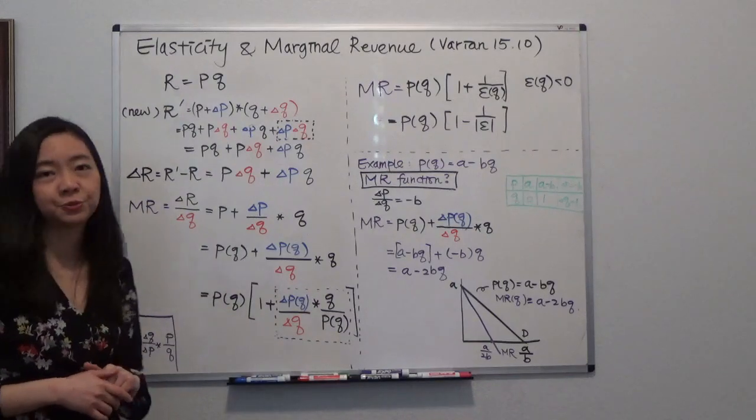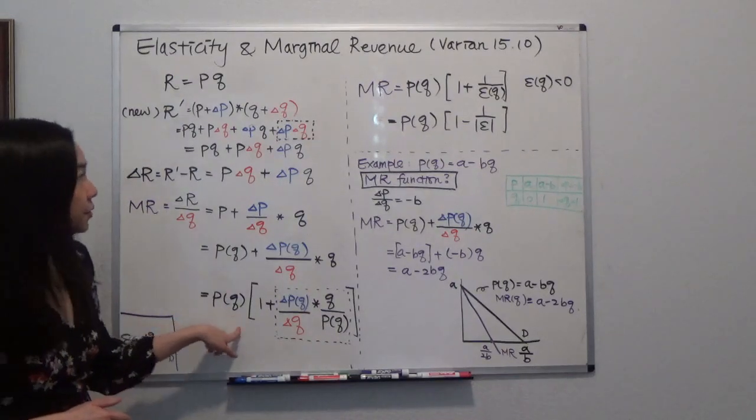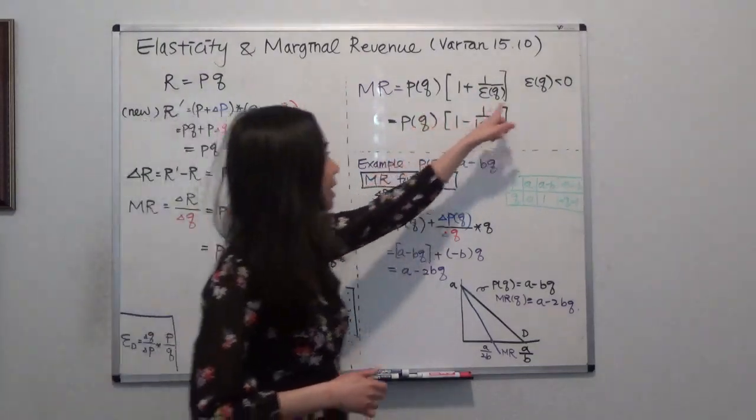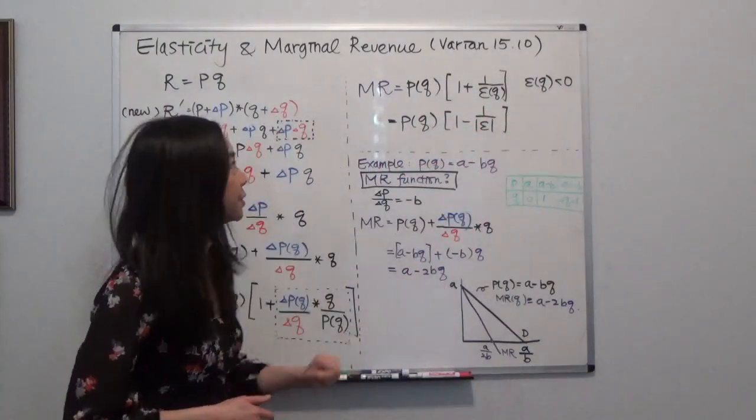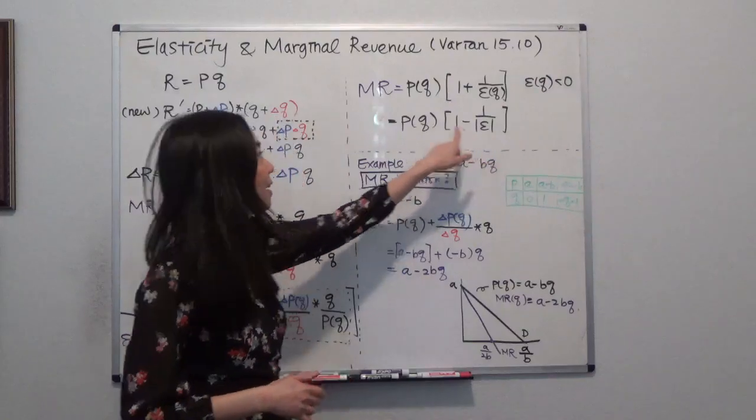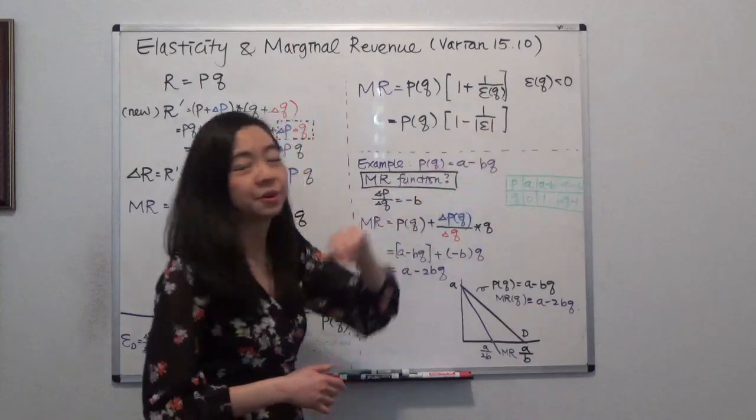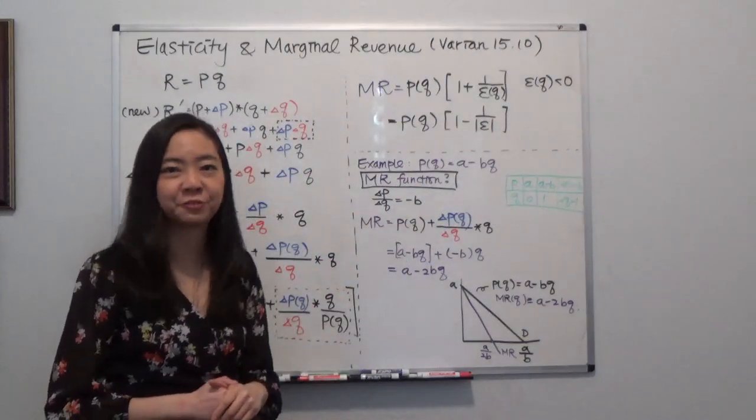So that is my marginal revenue. Notice that your elasticity of demand is something negative. Therefore I can rewrite that as price times 1 minus the reciprocal of the price elasticity of demand.